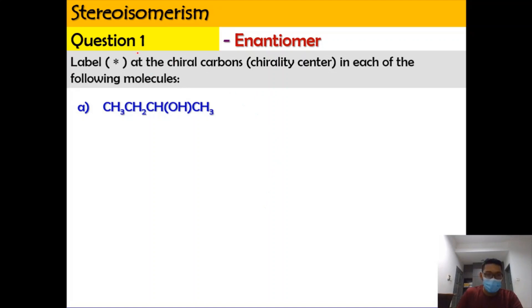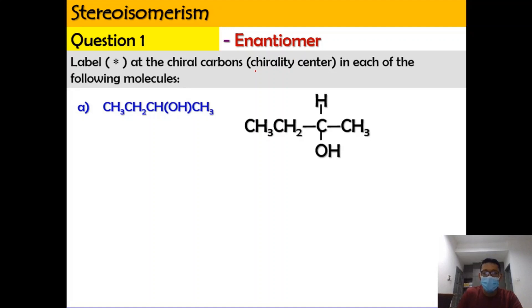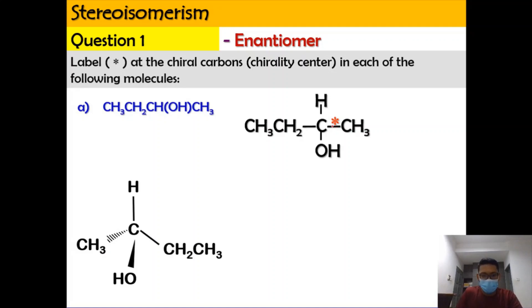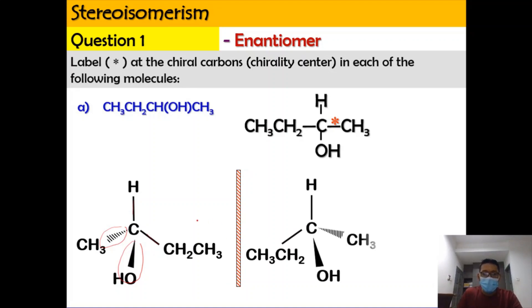For question one, label the star at the chiral carbon in each molecule and draw the enantiomer. For CH3–CH2–CH(OH)–CH3, this carbon is the chiral center because it is attached to four different groups. Draw it in 3D — two bonds in plane, one above and one below the plane. Draw the mirror, and create a mirror image where OH reflects to OH, and the other groups reflect accordingly.